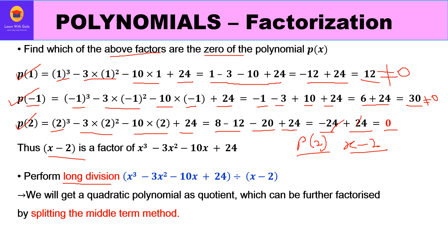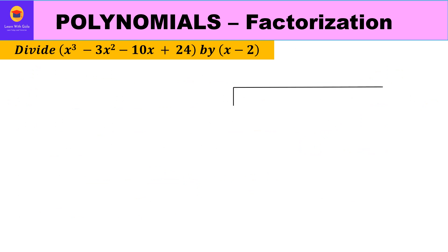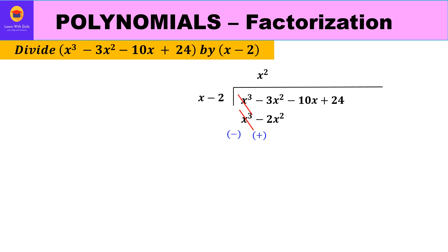Now we perform long division, dividing the polynomial x³ - 3x² - 10x + 24 by x - 2. We ask: what multiplied by x gives x³? That is x². So the first term of the quotient is x², and x²(x - 2) = x³ - 2x². Changing signs and subtracting, x³ cancels and -3x² + 2x² gives -x².